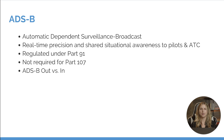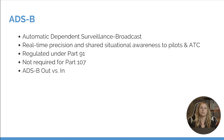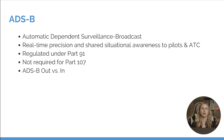ADS-B — what is it? It stands for Automatic Dependent Surveillance Broadcast. This is mainly used between manned aircraft and ATC, giving real-time precision and shared situational awareness between both parties. As of right now, this is regulated under Part 91 and is not required for Part 107 operations for the time being. ADS-B out is the capability of the aircraft to broadcast that information, while ADS-B in is when the manned aircraft is able to receive information — for example, picking up other traffic inside the cockpit. Those are two terms you might see while studying for your Part 107.